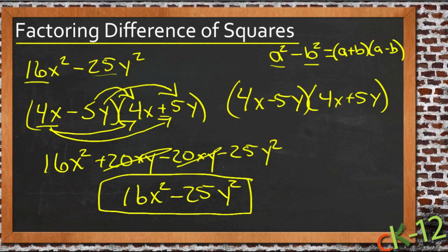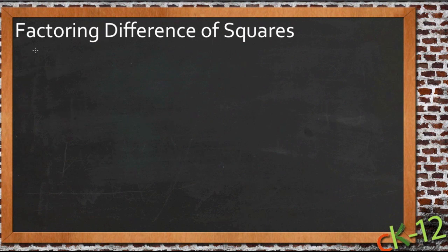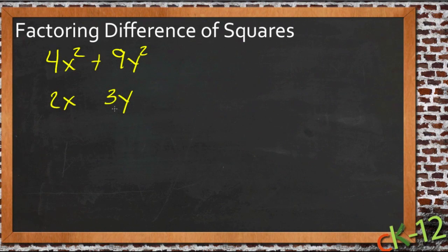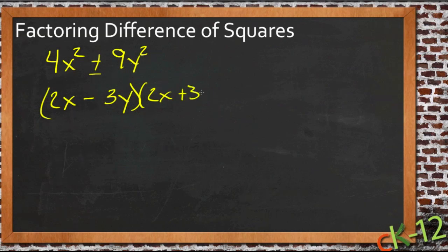Let's try one more — a different situation. Let's look at 4x squared plus 9y squared and see if this one might be a little bit different. If we were looking for the square roots, we'd have 2x and 3y. That's easy enough. But we have a plus in the middle. Does that make a difference? What if we did our same pattern and did (2x plus 3y) times (2x minus 3y)?